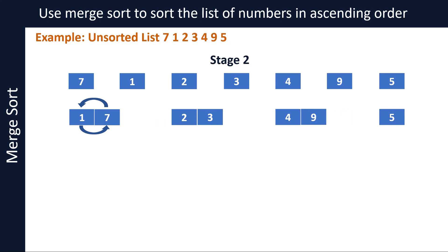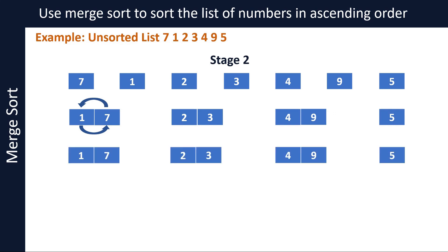We now have four sublists: the first with numbers one and seven, the second with numbers two and three, the third with numbers four and nine, and the fourth with just the number five. Let's merge each pair of sublists. Merging the sublist containing one and seven with the sublist containing two and three — since seven should come after three in sort order — the algorithm rearranges the numbers into a new sorted sublist comprising one, two, three, and seven.